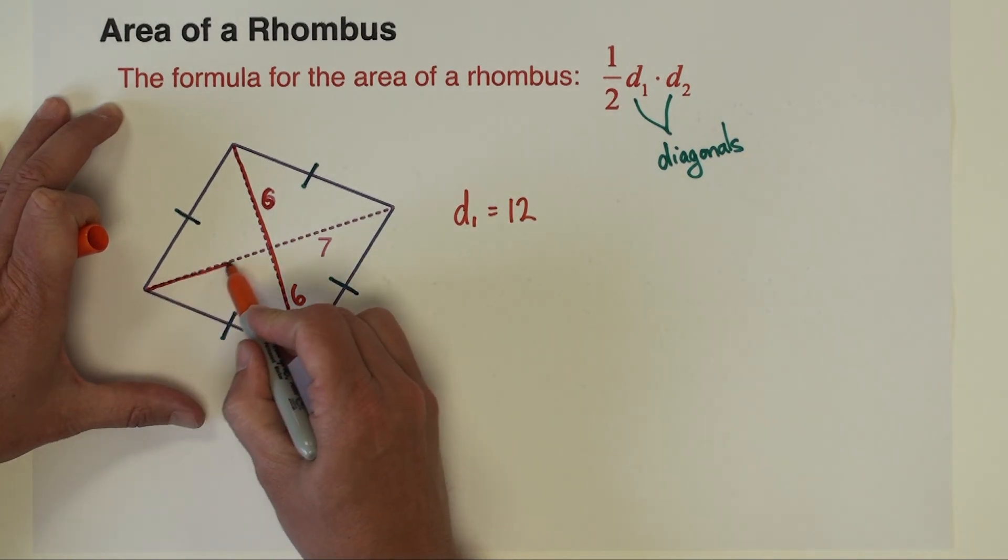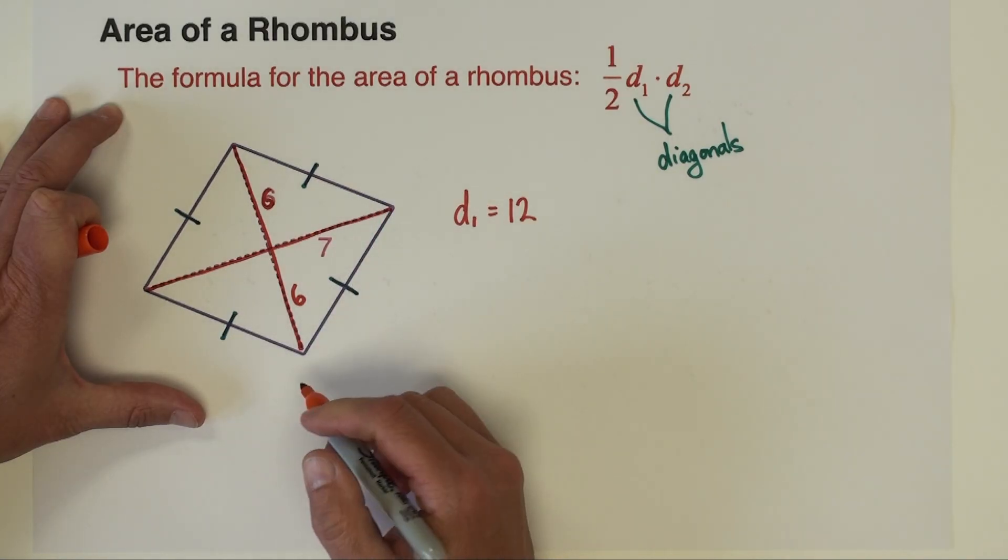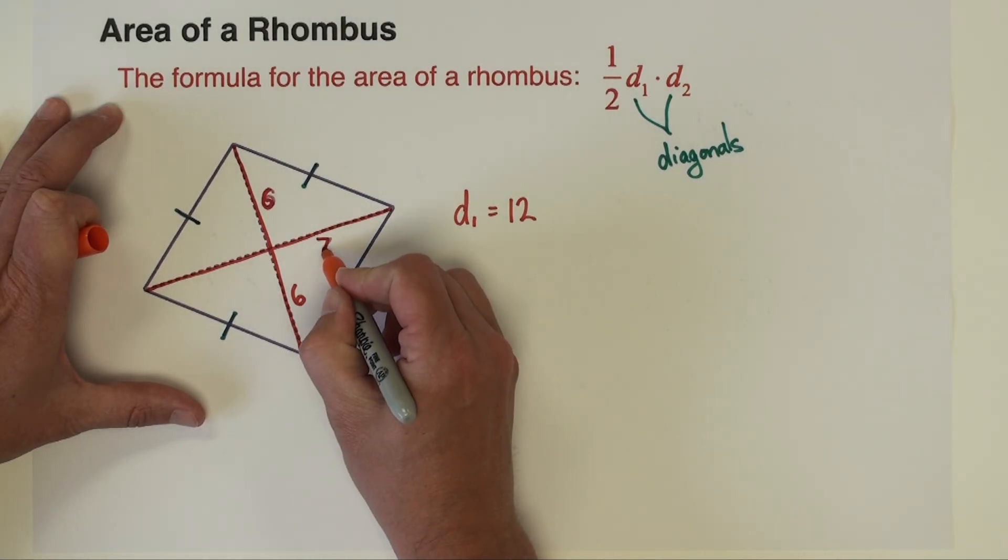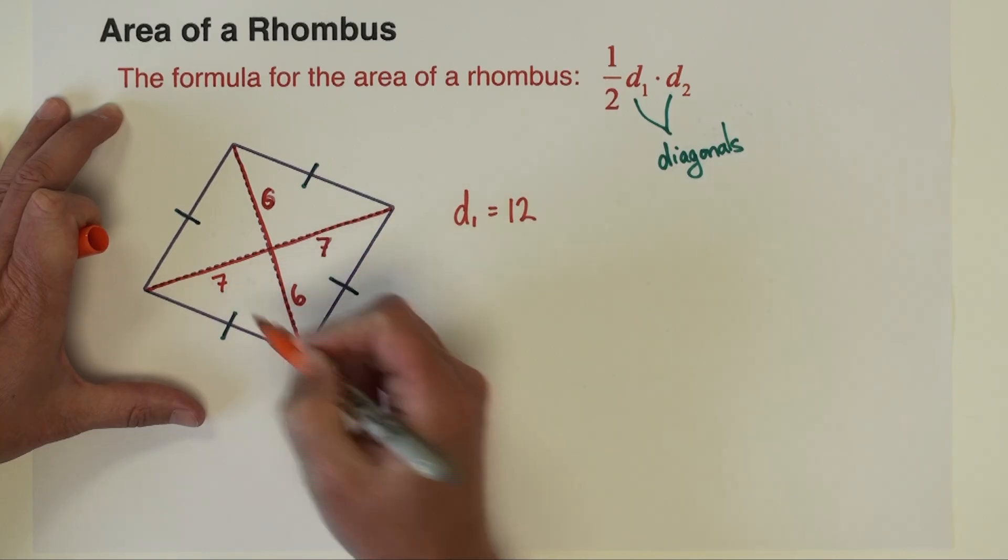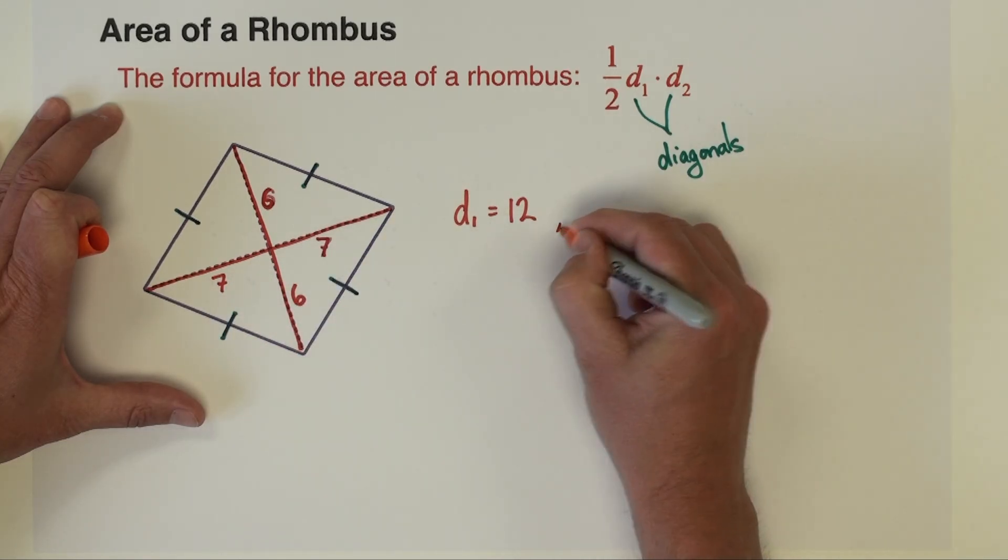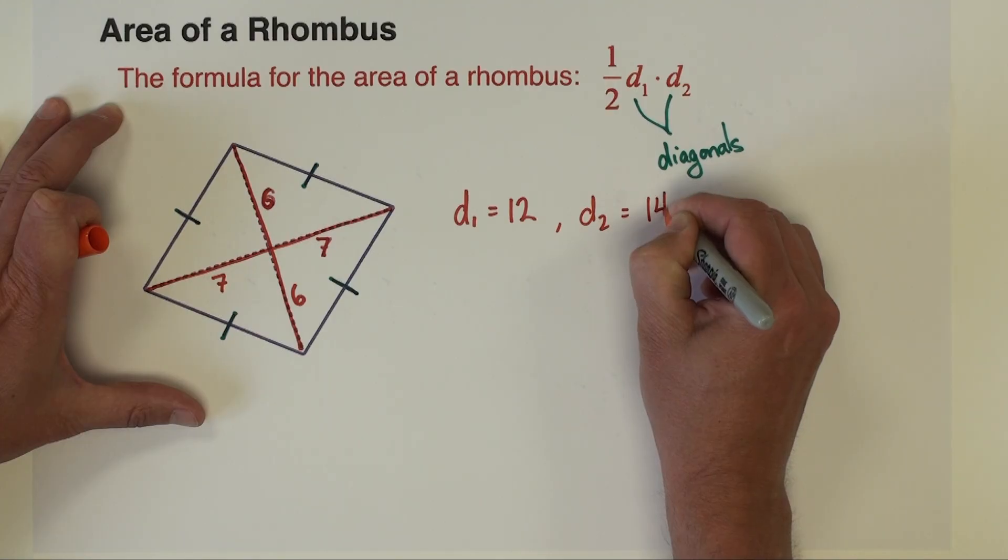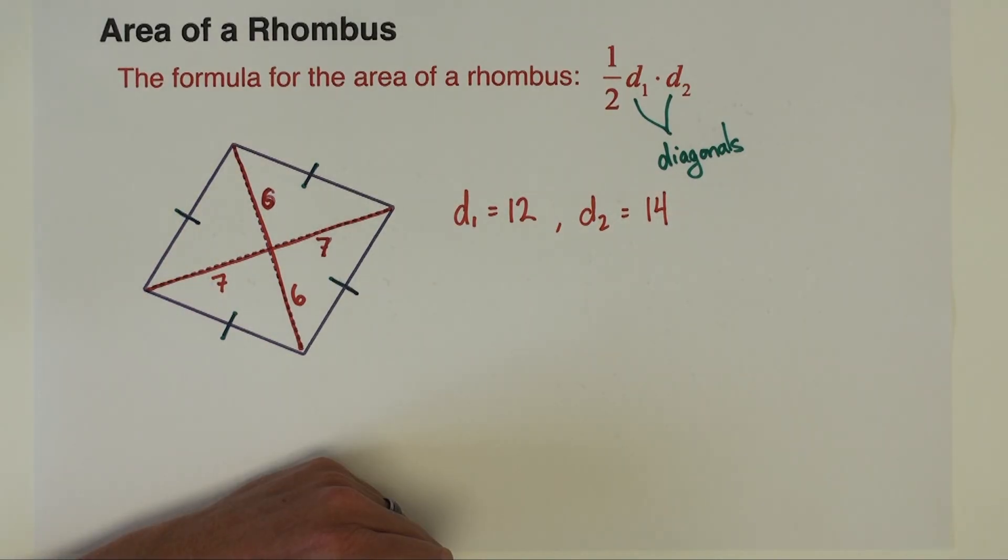The other diagonal then is going from corner to corner or vertex to vertex there. We have a seven on that side. So it's going to be seven there. The other diagonal is 14. So we need to use those two values in our formula.